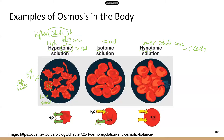If cells are in a hypotonic solution, inside the cell we have 0.9% sodium chloride, and the hypotonic solution has, say, 0.3%. Water moves from low solute to high solute, so water moves into the cell, causing the cells to expand and get bigger. If too much water moves in, eventually the cell is going to explode — it can't handle all that water pressure, so it breaks.